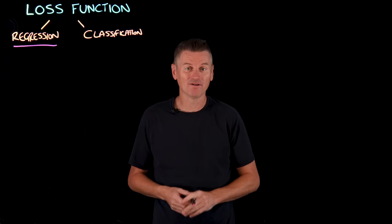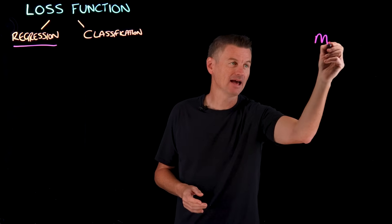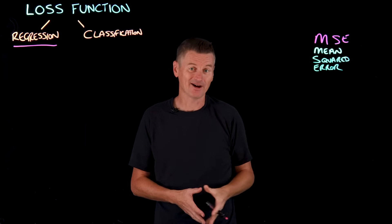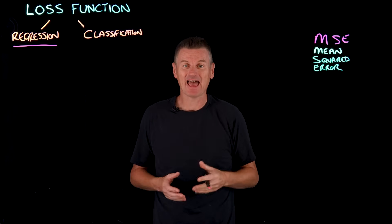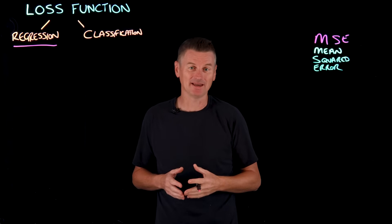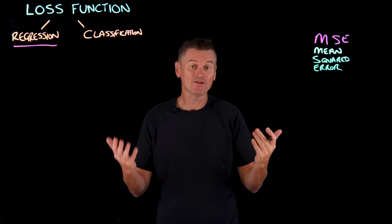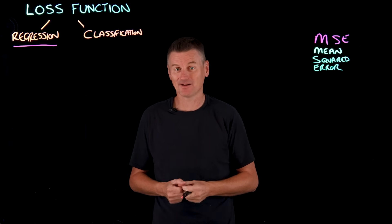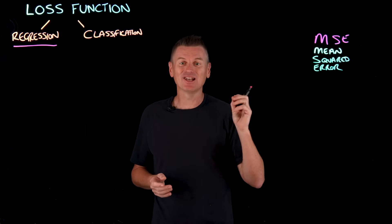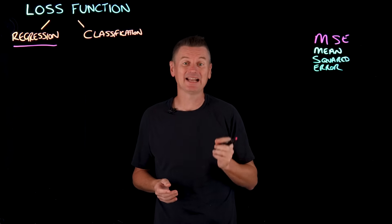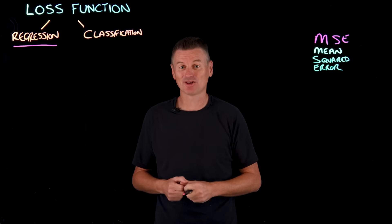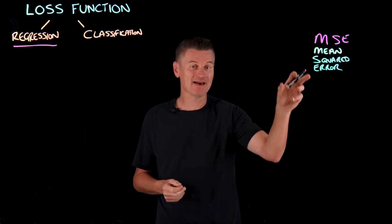The most common is called MSE or mean squared error. As its name suggests, MSE is calculated as the average of the squared difference between the predicted value and the true value across all training examples. Squaring the error means that MSE gives large mistakes a disproportionately heavy impact on overall loss, which strongly punishes outliers.